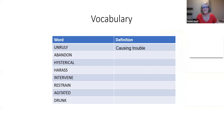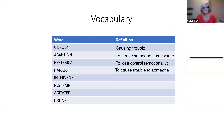Unruly means causing trouble. Abandoned — to leave someone somewhere. Hysterical — to lose control emotionally. Harass — to cause trouble to someone. Intervene — to try to help, where you're a neutral party and not involved with the people who are causing a problem.